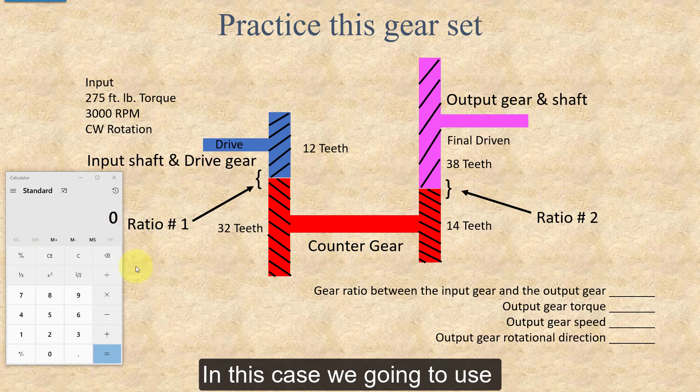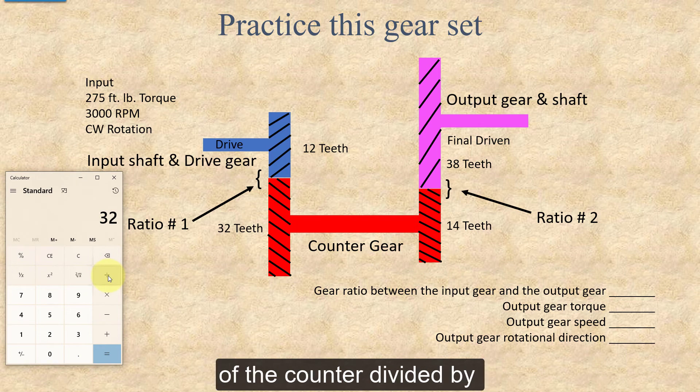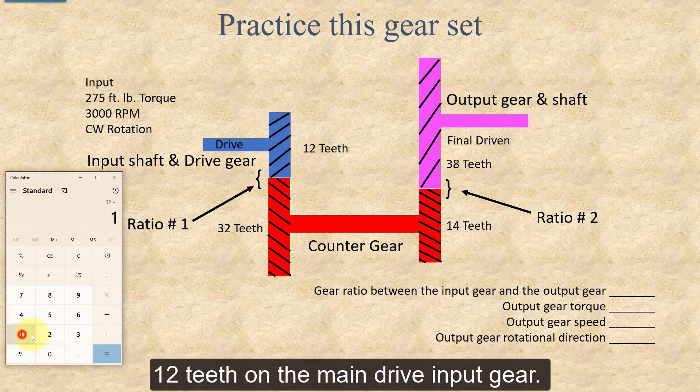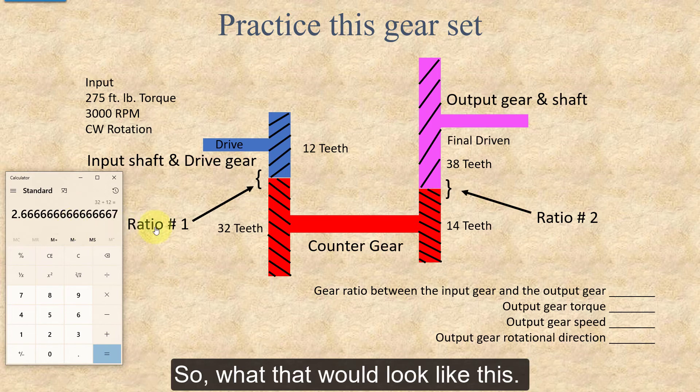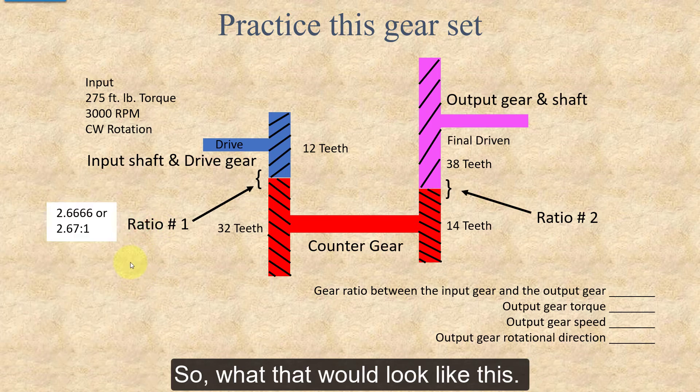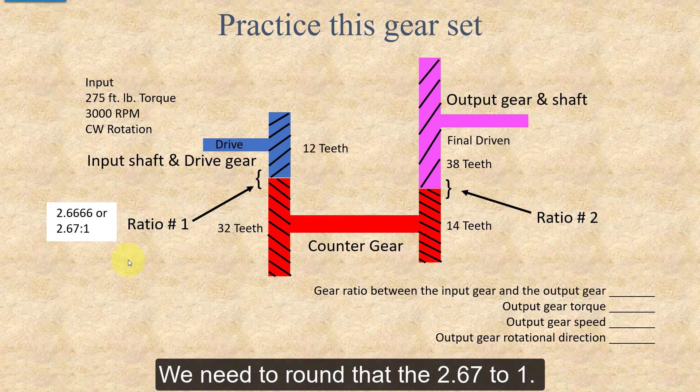In this case, we're going to use 32 teeth on the driven gear of the counter divided by 12 teeth on the main drive input gear. Now that gives me a calculation of 2.6666, so that would look like this. We need to round that to 2.67 to 1.